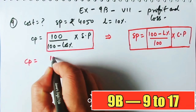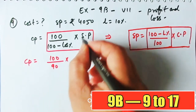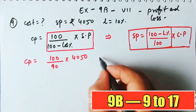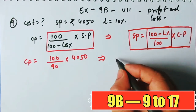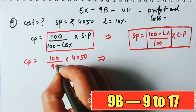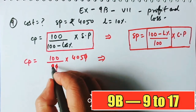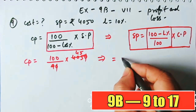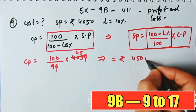Putting in the values: CP = 100/(100 - 10) × 4050 = 100/90 × 4050. Solving this, 9 goes into 4050 exactly 450 times, giving CP = ₹4500.